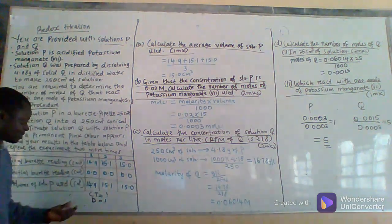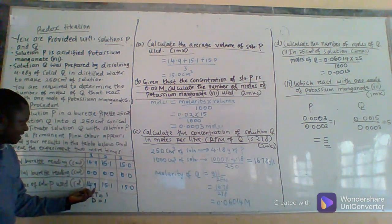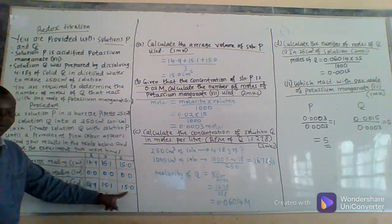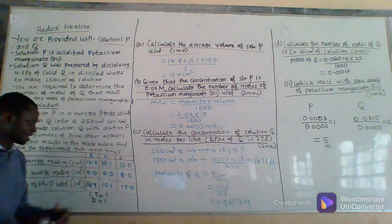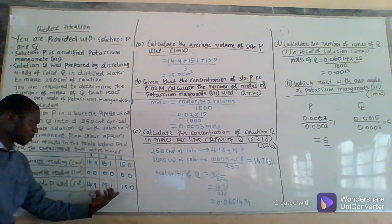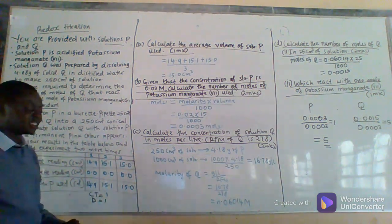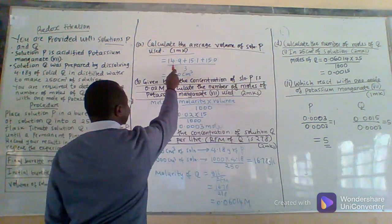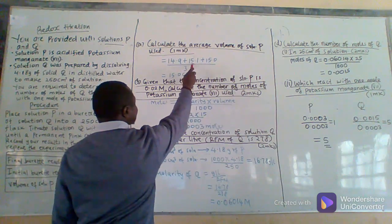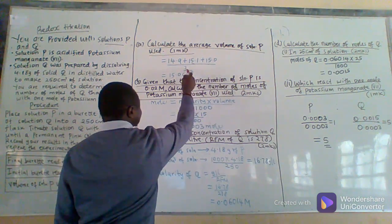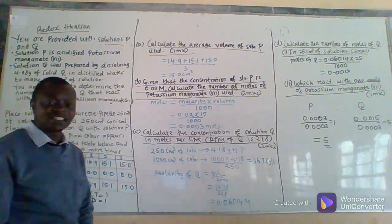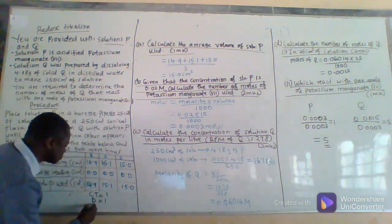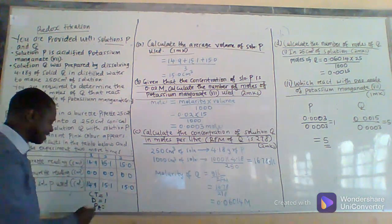Let's look at our table. The value for the first titration was 14.9, the second one was 15.1, and the third one is 15.0. All these values are within the range of plus or minus 0.2, so they can be averaged. To calculate the average volume of solution P used, we take 14.9 plus 15.1 plus 15.0 divided by 3 to get 15.0 cm³ as the average volume. By doing that, you will get the mark for the principle of averaging.